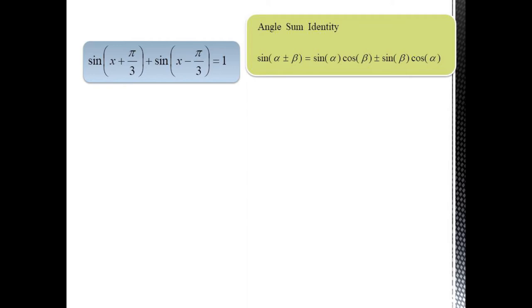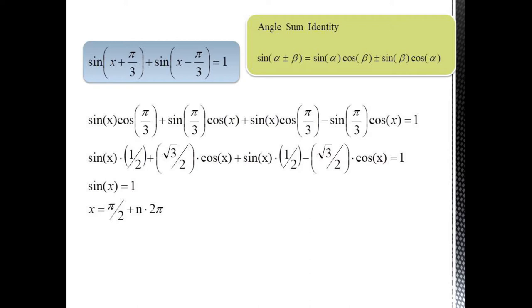we replace sine of x plus pi over 3 with sine x cosine pi over 3 plus sine pi over 3 times cosine x. And sine x minus pi over 3 with sine x cosine pi over 3 minus sine pi over 3 cosine x. This gives us one half sine x plus square root of 3 over 2 cosine x plus one half sine x minus square root of 3 over 2 cosine x equals 1. The cosine terms cancel and one half sine x plus one half sine x is just sine x. So we're left with sine x equals 1. And this we can easily solve to get x equals pi over 2 plus n times 2 pi.